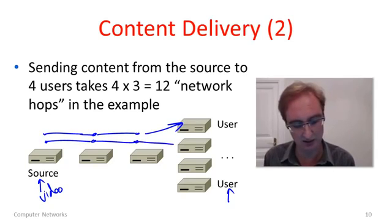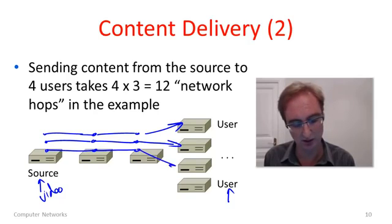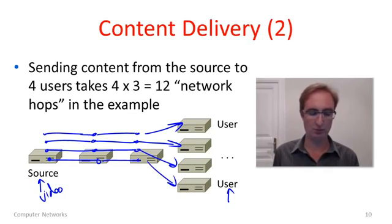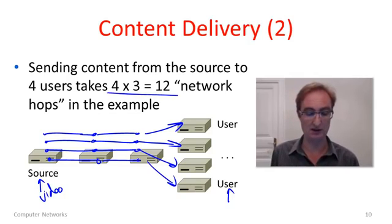Now the source sends the same video to the second user, the third user, you can see where I'm going here, and the fourth user. And the total number of network hops we've used, or work we've done, is 4 by 3. That's 12 network hops in this example.